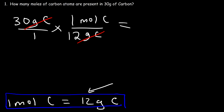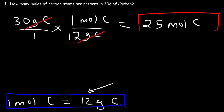It's going to be 30 divided by 12, which is 2.5. So 30 grams of carbon is equivalent to 2.5 moles of carbon. That's how you convert grams to moles.